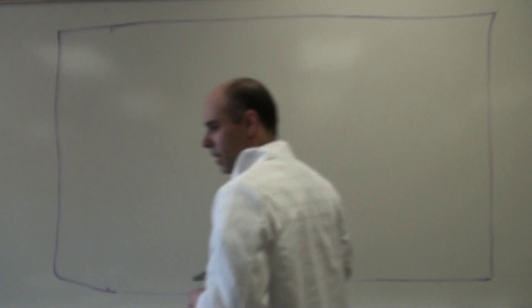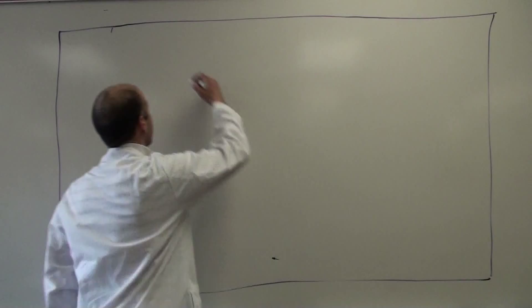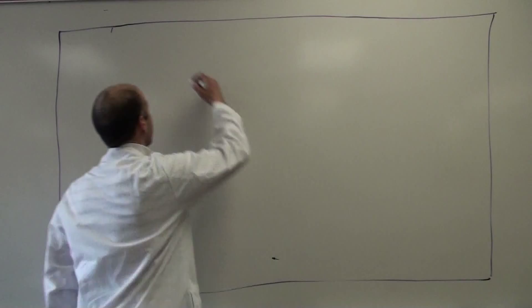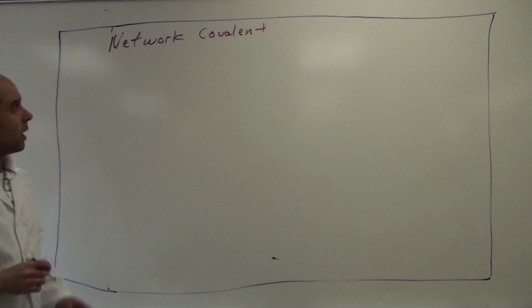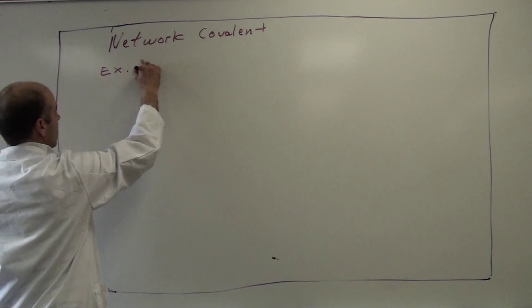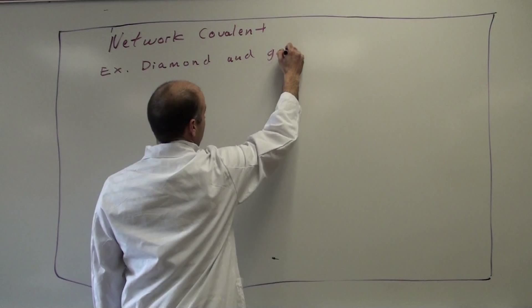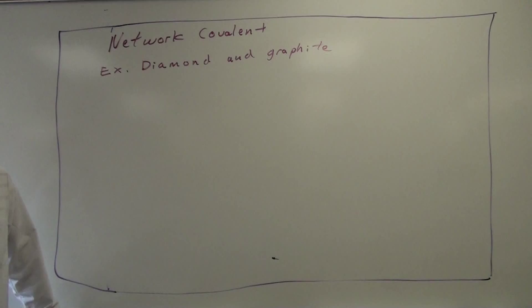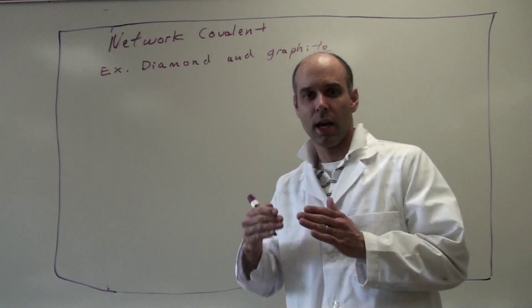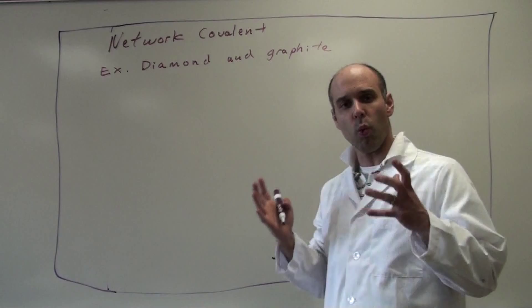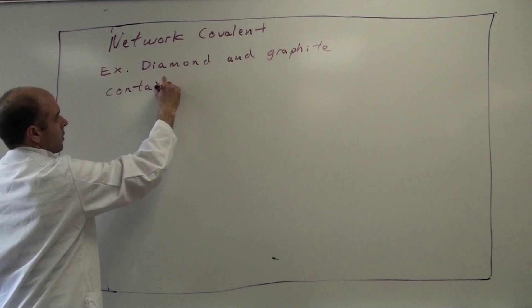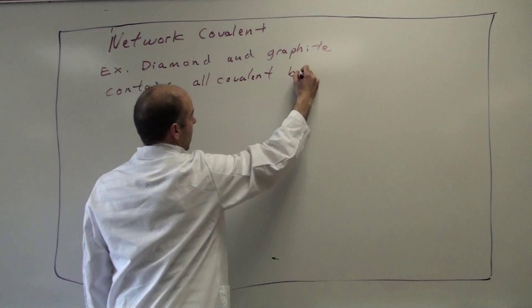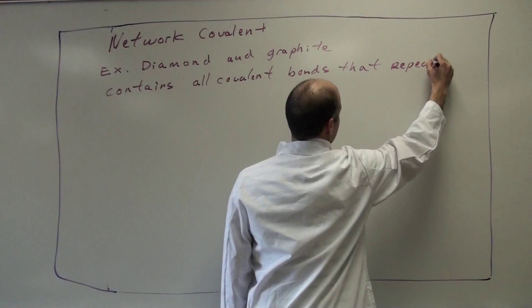The first type of solid we are going to examine are network covalents. Examples of network covalents are diamond and graphite. The thing about network covalent solids is that they're composed completely of covalent bonds, but these bonds continue on and on in a repeating pattern. So what you have is one massively large molecule. A network covalent contains all covalent bonds that repeat in a regular pattern.